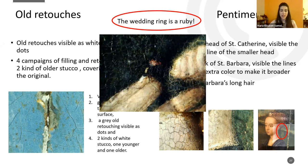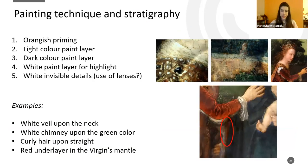We gathered information about the painting technique and stratigraphy. Isenbrant started with the orange priming, then applied the light color, and then the dark color on top. On top of that, he applied white paint for highlights. We also found some very fine white details only visible with the microscope — suggesting he painted them with the use of lenses. Examples include the white veil on the neck, the curly hair over the straight hair, and also the use of a red underlayer in the blue mantle, which gives a more intense blue color.